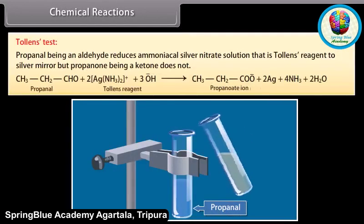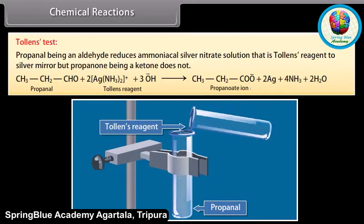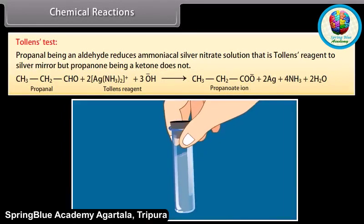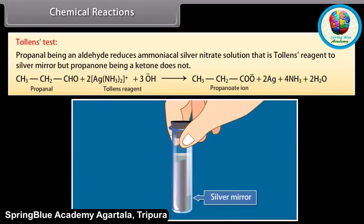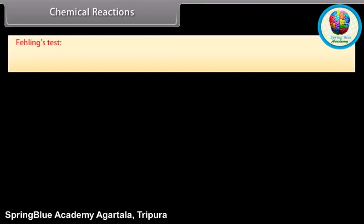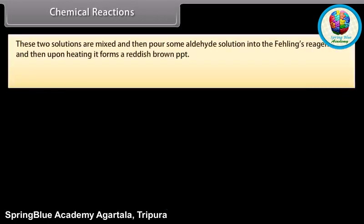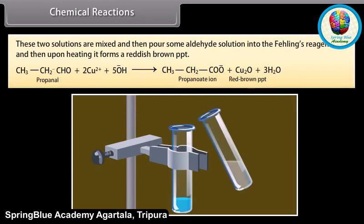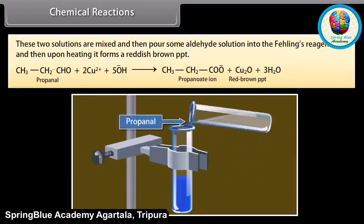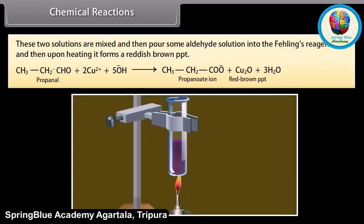Tollens test: propanal, being an aldehyde, reduces ammoniacal silver nitrate solution (Tollens reagent) to a silver mirror, but propanone, being a ketone, does not. Fehling's test: Fehling solution is a mixture of aqueous copper sulfate (Fehling A) and alkaline solution of Rochelle's salt, that is sodium potassium tartrate (Fehling B). These two solutions are mixed, then some aldehyde solution is added, and upon heating it forms a reddish-brown precipitate.